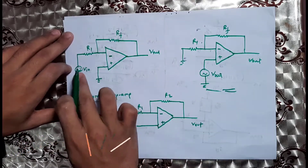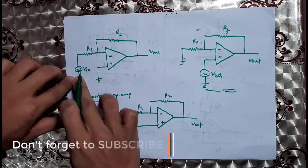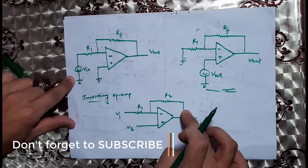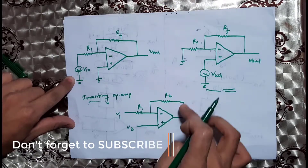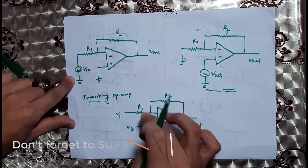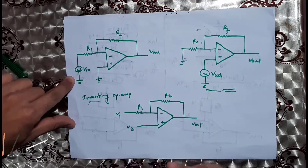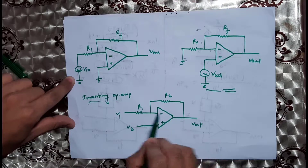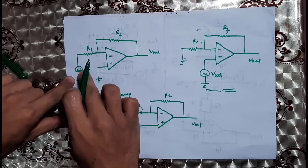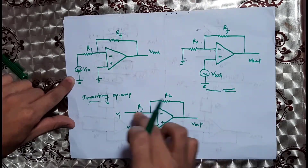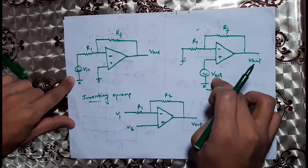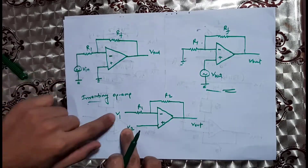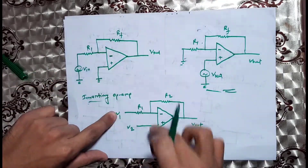In the inverting configuration, we always have negative feedback. We have negative feedback connected from the output. We have positive, negative, or inverting terminal and supply. If we combine both the inverting and non-inverting inputs with negative feedback, we get two inputs in the differential amplifier.